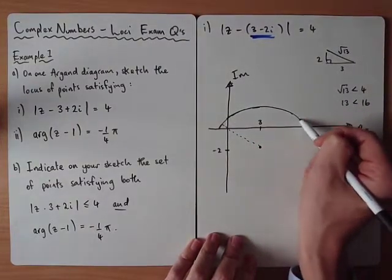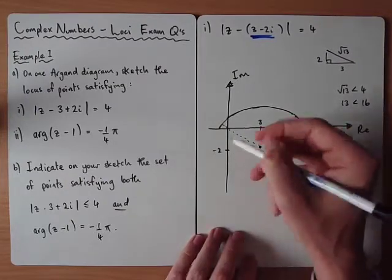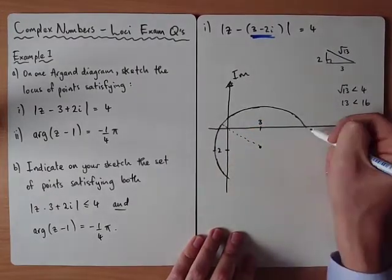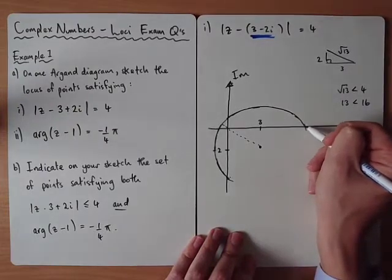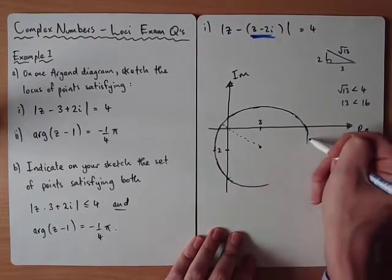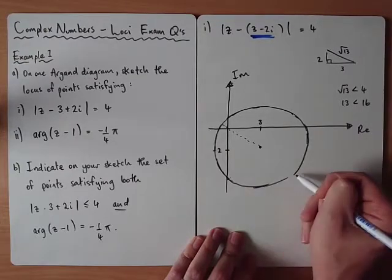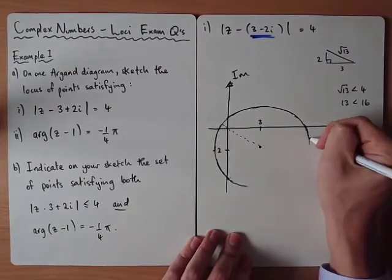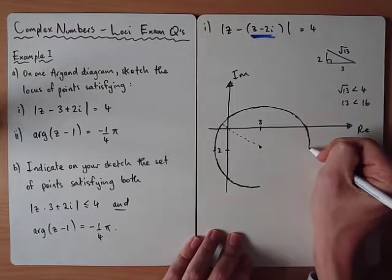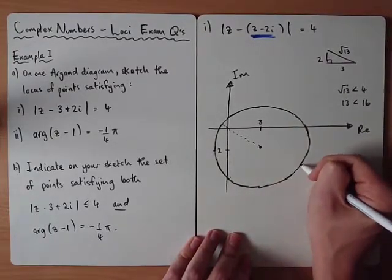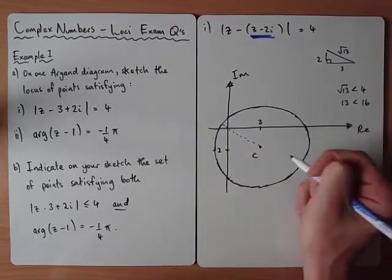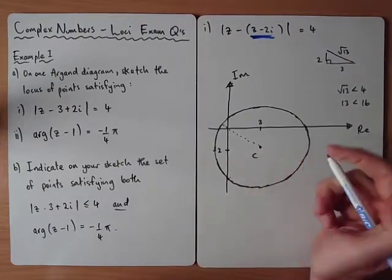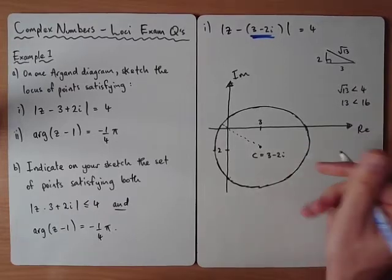This is taken from an old paper and it's a slightly unusual question. Usually when you sketch things you should label where it crosses the axes, but checking the mark scheme for this one, you didn't need to show where it crosses the real axis and the imaginary axis. All it wants you to do is draw a circle. So there's your circle — you should use a compass — centre equals 3 minus 2i.